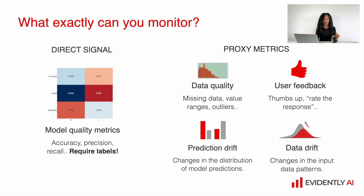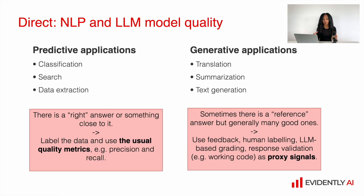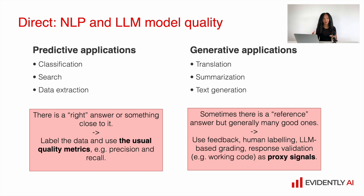Let's discuss this in more detail. When it comes to direct model evaluation for predictive applications like classification, ranking, or data extraction, we can assume there is a right answer, so we can come up with labels and calculate quality metrics comparing the model's output with those labels. However, for generative applications like translation, text summarization, or text generation, there is no single right answer – there are many good ones, so we cannot really rely on labeling and standard quality metrics. Here we can use feedback like human labeling or large language model-based grading, some response validation such as correct JSON output or working code, as proxy signals to build our grading.